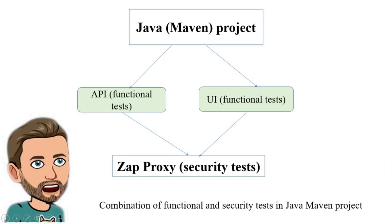I am sure any QA or penetration tester wants fully automated penetration testing and to integrate that into a CI model. Sure, it doesn't hack the application — it shows only potential threats, because this is a scanner.